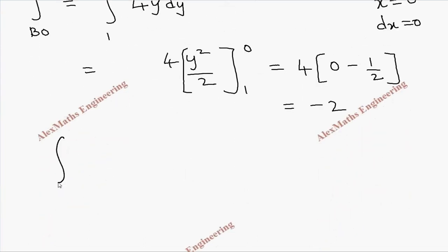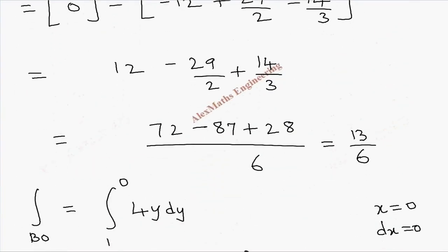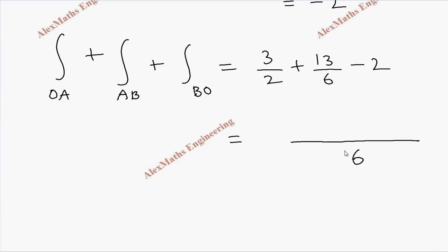Now combining all three parts: integral over OA plus integral over AB plus integral over BO equals 3/2 plus 13/6 minus 2. Taking LCM as 6: 9/6 plus 13/6 minus 12/6, which after simplification gives 10/6, equal to 5/3. So the left-hand side equals 5/3.